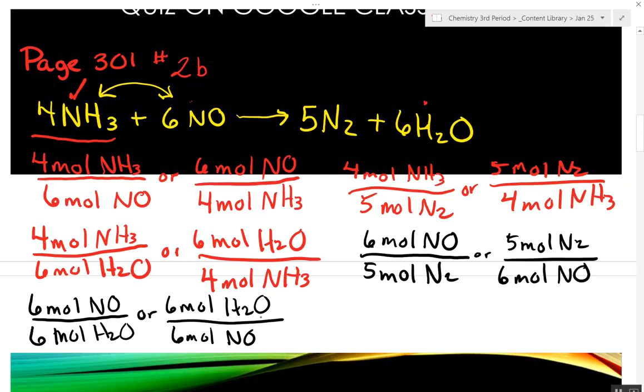So I'm going to flip it over: 6 moles of H2O over 6 moles of NO. And then finally, so we've done all the combinations. And the number is going to get squished down.